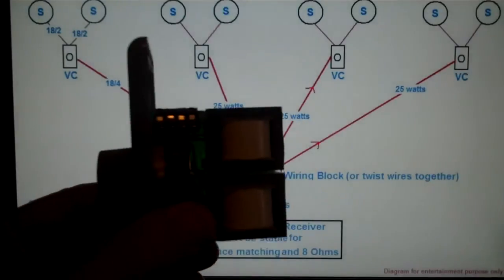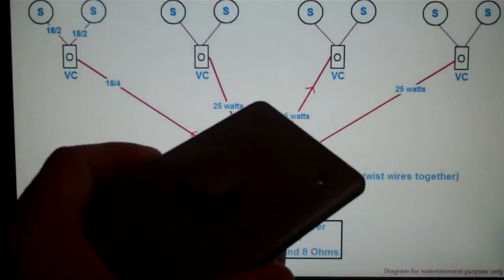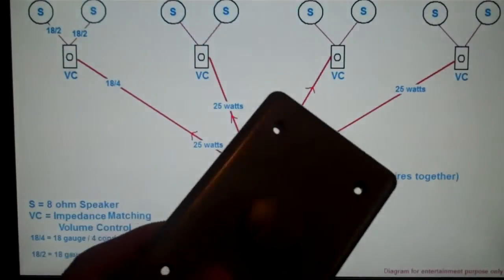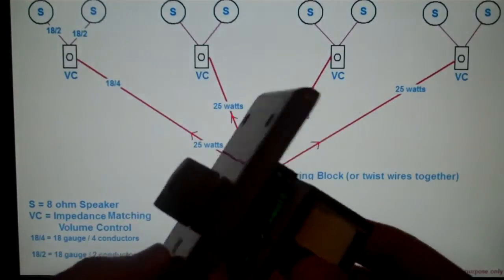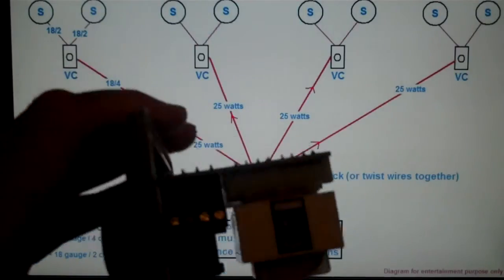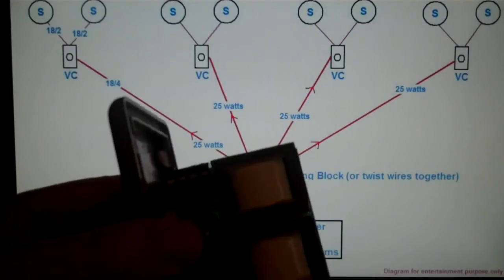Here's an impedance matching volume control. You've probably seen these before. You can ignore the color because the faceplates come in all different colors. But they're easily identifiable by that big bulk of circuitry and wiring on the back.